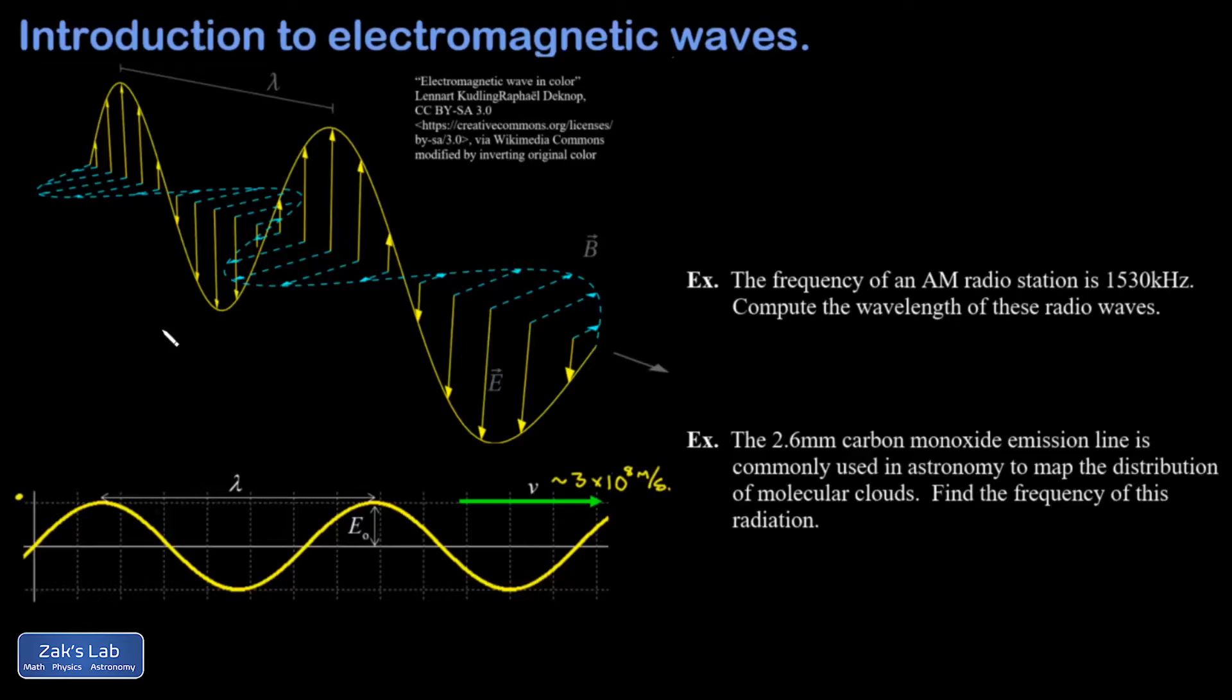Notice in the diagram on the bottom, I've labeled the wavelength of the wave. That's the distance to get from one crest to the next, or one trough to the next.